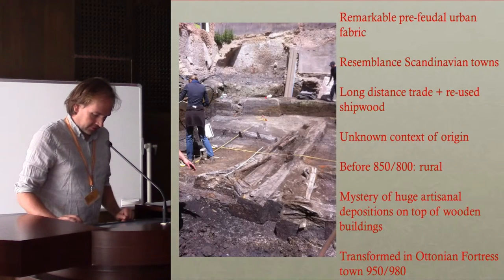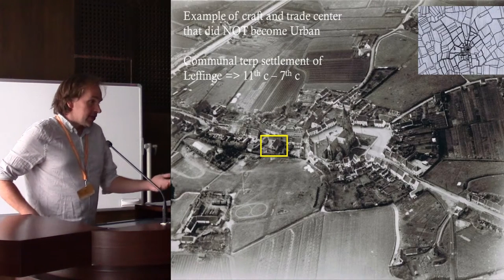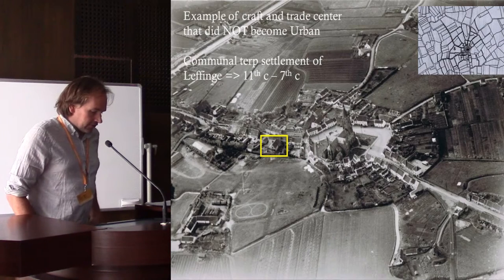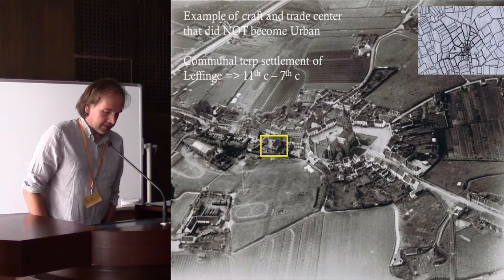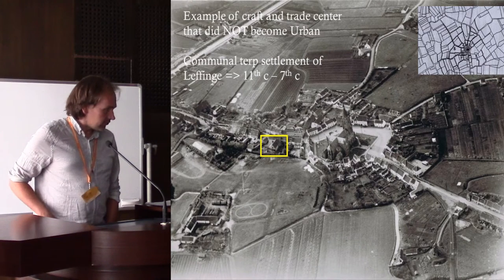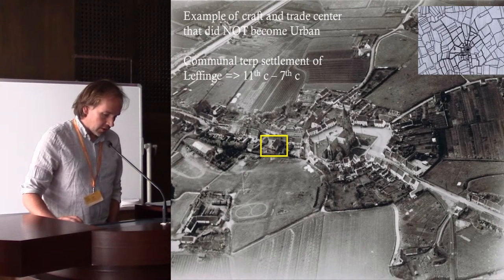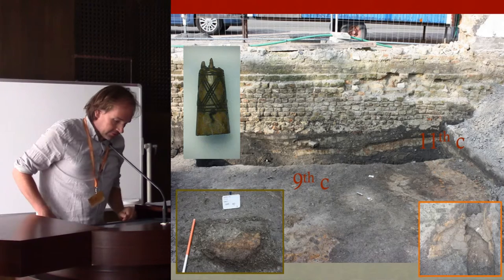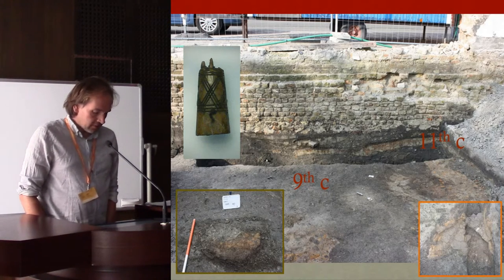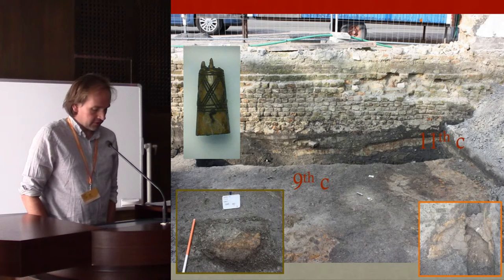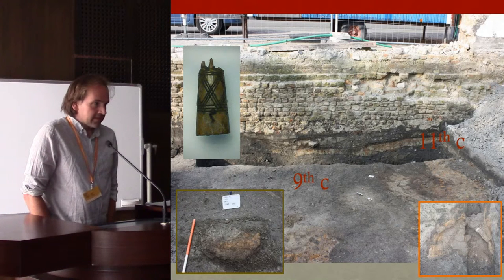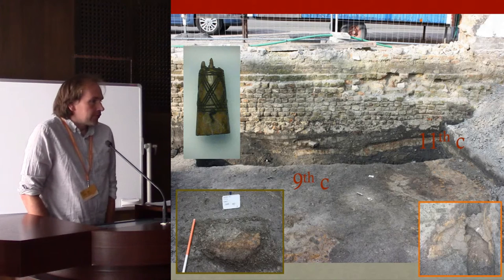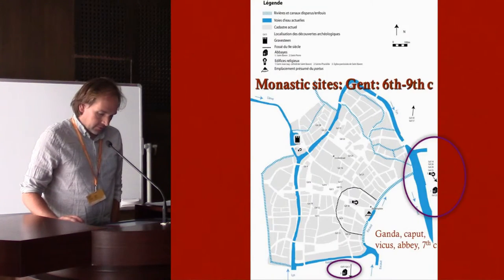Antwerp became eventually a town because of Ottonian involvement. But here we have a communal terp settlement in Leffingen, in the coastal plain, excavated over the last two years. It's a terp mound like in Friesland, with the same features as Antwerp in roughly the same period. We have about 20 metal ovens, even fibulae were produced, and there is textile production because we are in the coastal plain. It has a lot of features that are not rural — it's a central place with urban potential, but it never became urban because some things lacked.